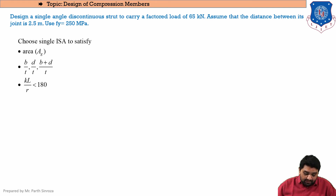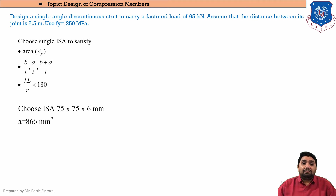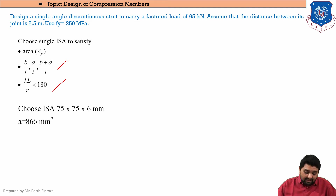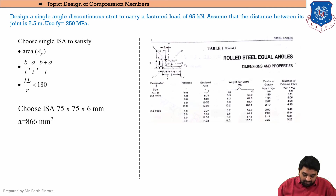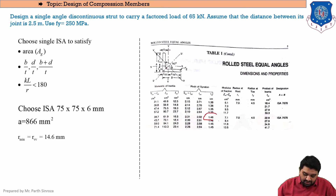I have selected the section ISA 75×75×6 from the steel table page 4. Its cross-sectional area is 866 mm², which is greater than the required 777 mm². From page 5 of the steel table, the minimum radius of gyration r_min = 1.46 cm = 14.6 mm.